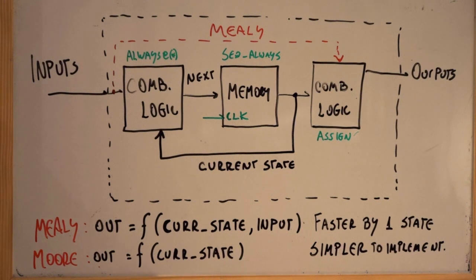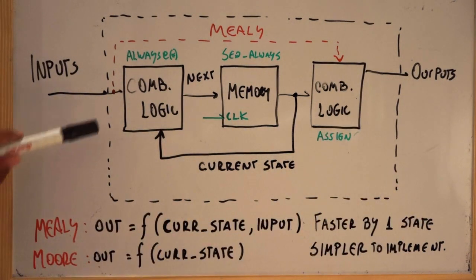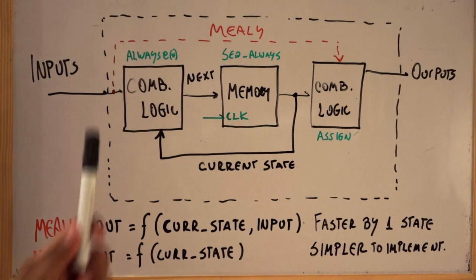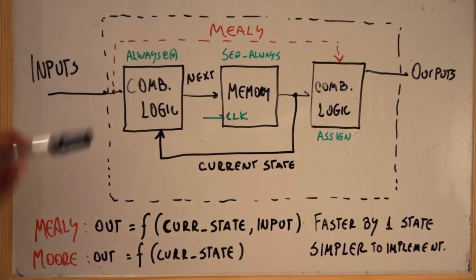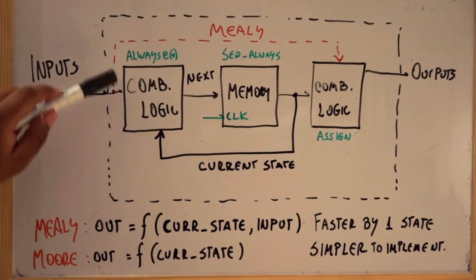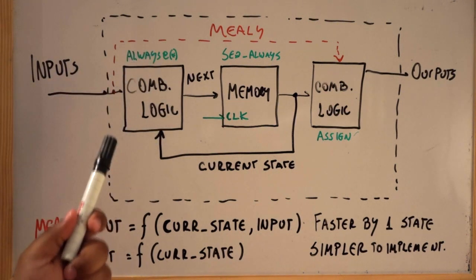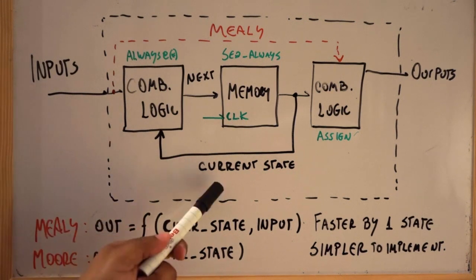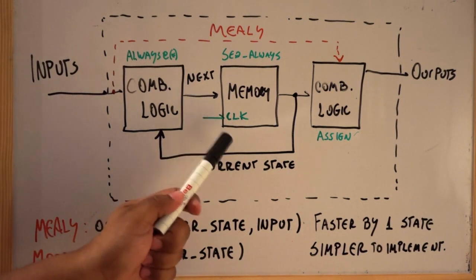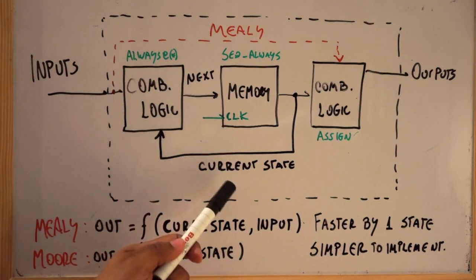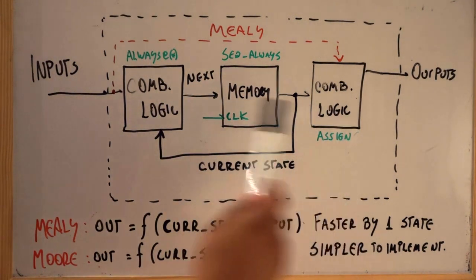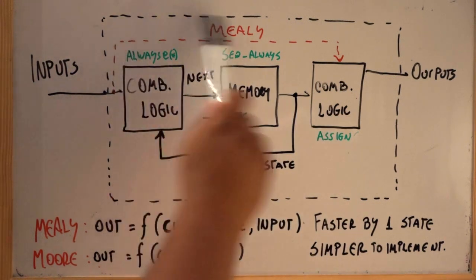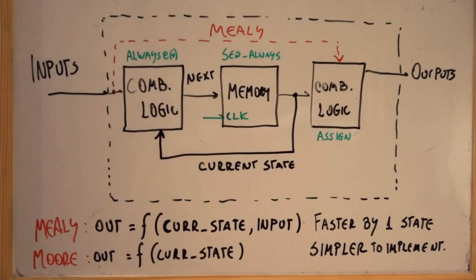Let's take a look at finite state machines. As a normal digital circuit, it has inputs and outputs, but we're going to focus on what we have inside. The finite state machine can be divided into three parts: two combinational logic parts and one sequential part. This first combinational part is going to calculate the next state based on the inputs and the current state. The sequential part is going to memorize or store the current state.